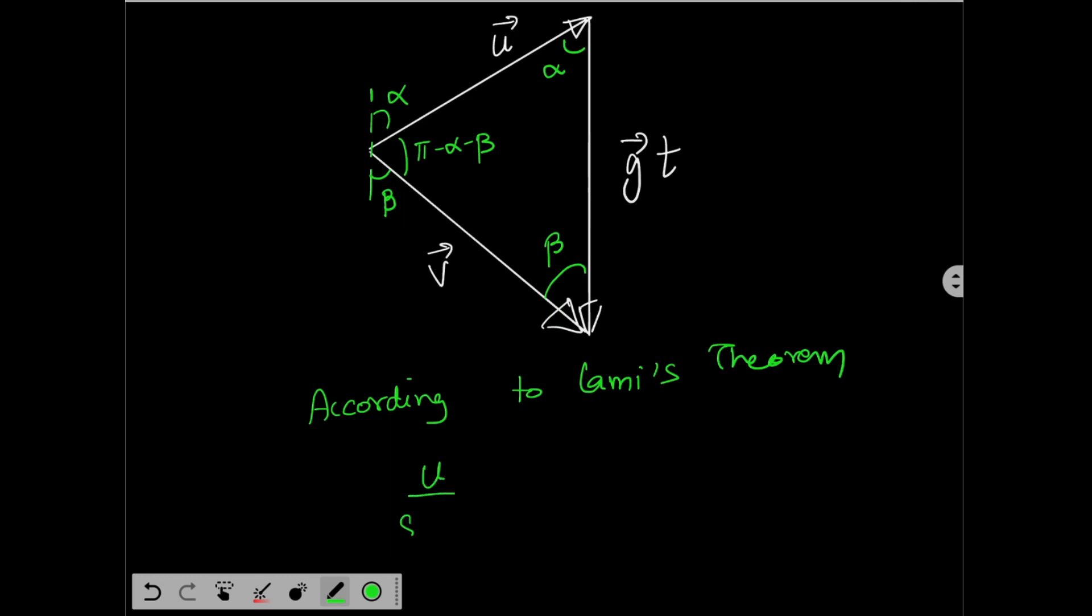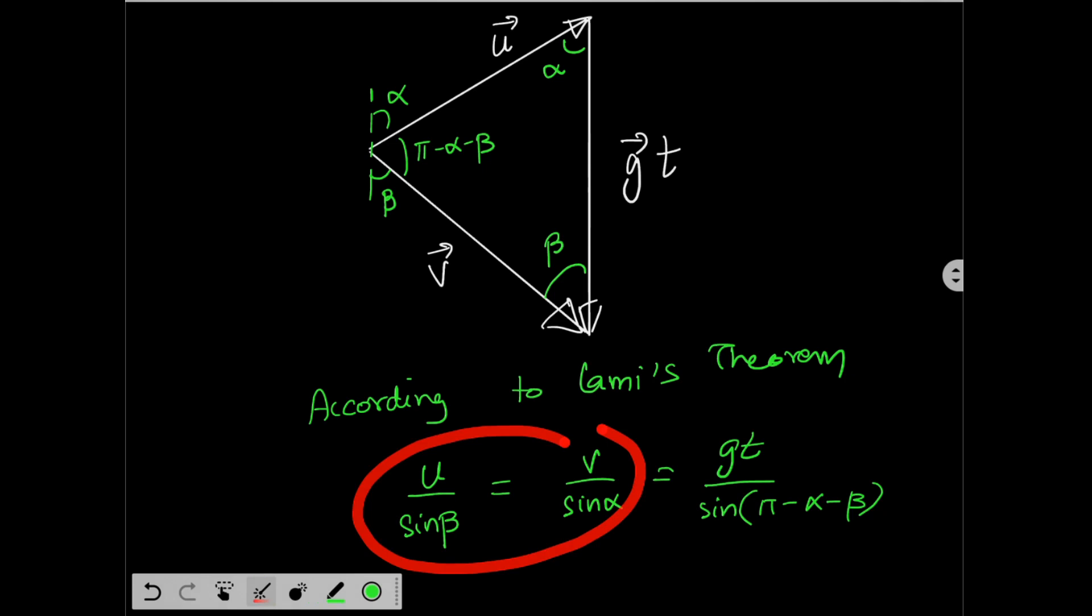u by sine beta equal to v by sine alpha equal to gt by sine of pi minus alpha minus beta. So, from here we can easily find v. v will be u sine alpha by sine beta. Okay,